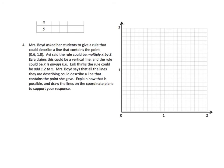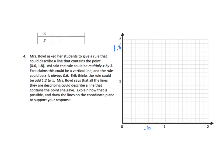Finally, we have number 4. Mrs. Boyd asked her students to give a rule that could describe a line that contains the points 6/10 and 1 and 8/10. Avi said the rule could be multiplied by 3. Ezra claims this could be a vertical line. And the rule would be x always equals 6/10. Eric thinks the rule could be add 1 and 2/10 to x. Mrs. Boyd says all the lines they are describing could describe the line that contains the point she gave. Explain how this is possible. Draw the lines on the coordinate plane to support your response. So the first thing we should do is plot the point.